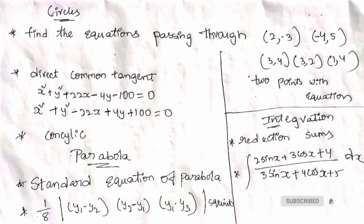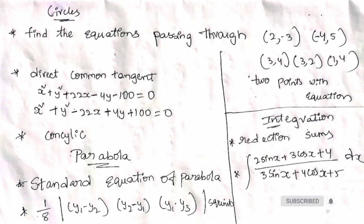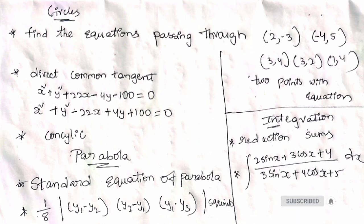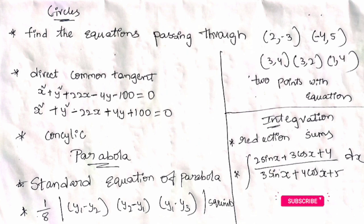In total, we have five models. We will talk about the Parabola. First of all, we have the standard equation of Parabola. Every year there is a sure question on this. We will talk about the parabola and y² = 4ax.